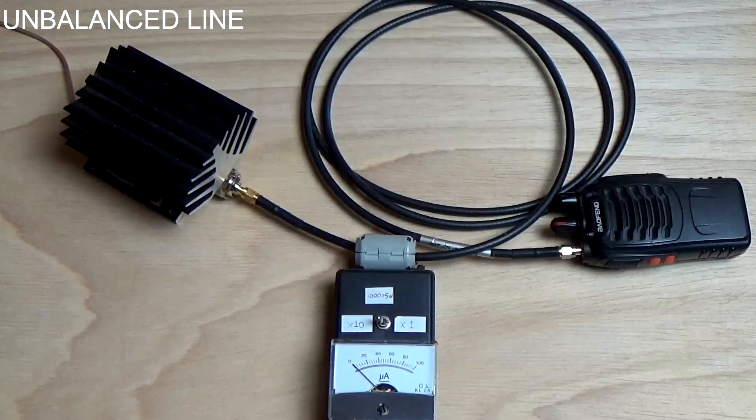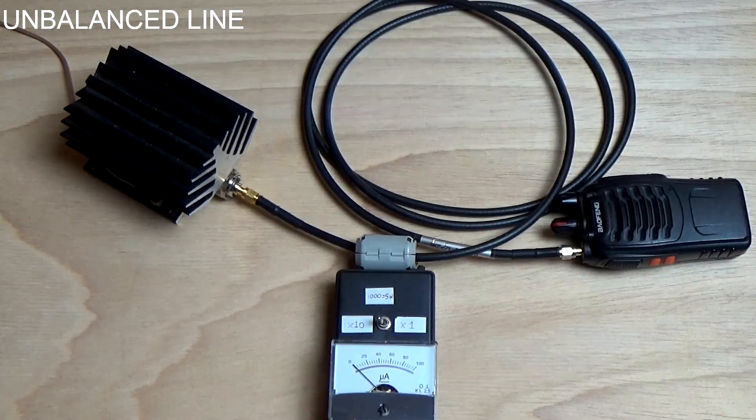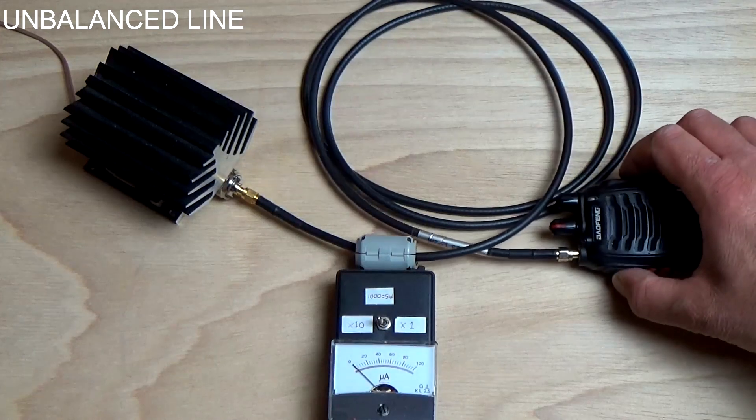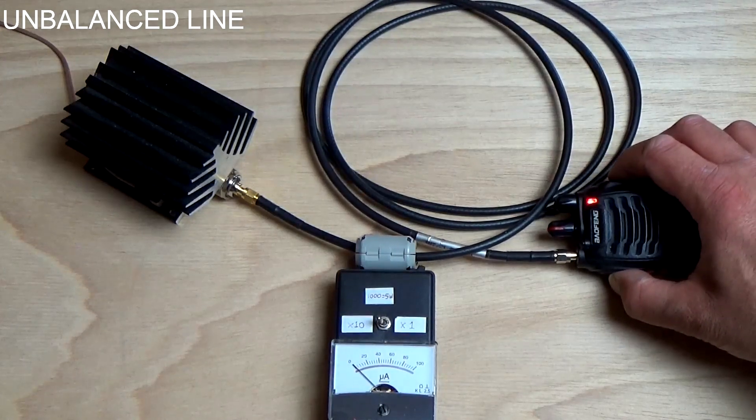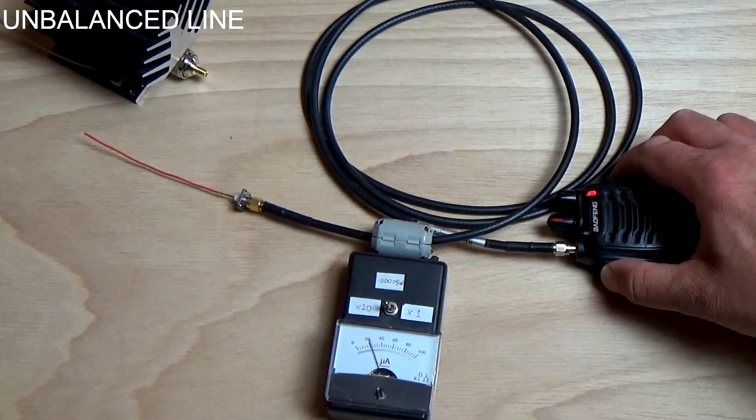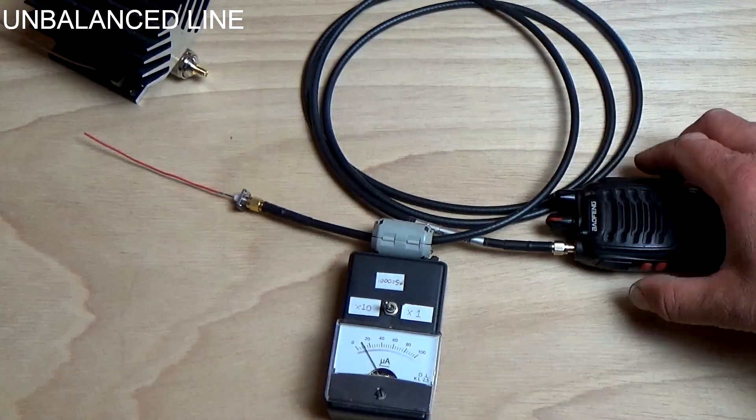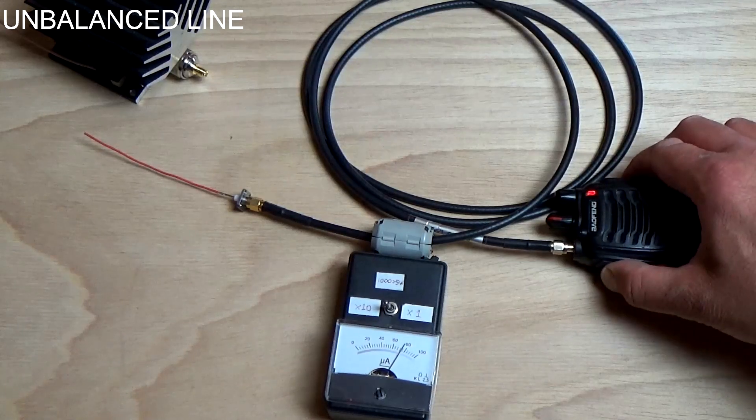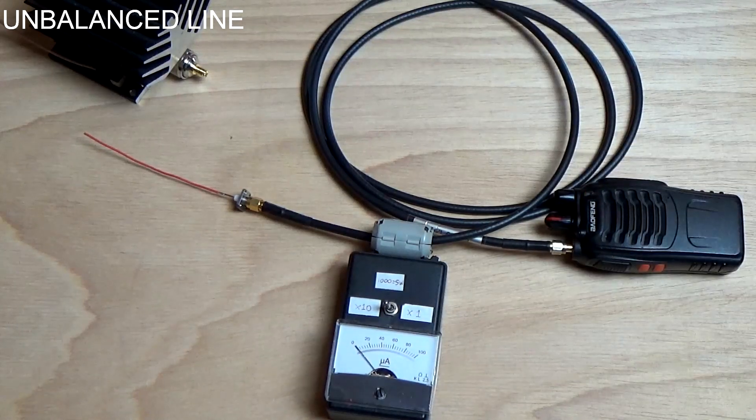Now let's make another experiment. If the coax is connected to the dummy load, it doesn't radiate. If connected to an antenna, it radiates. Why? And what has this to do with the coax being unbalanced?